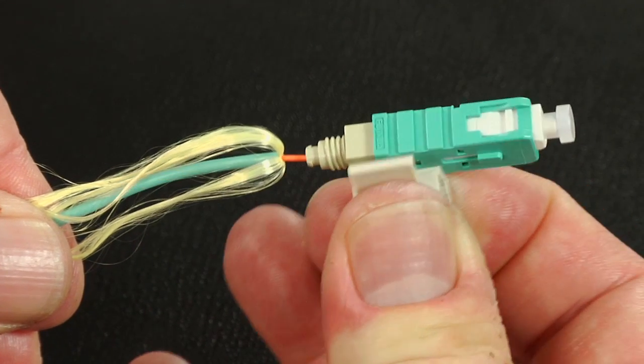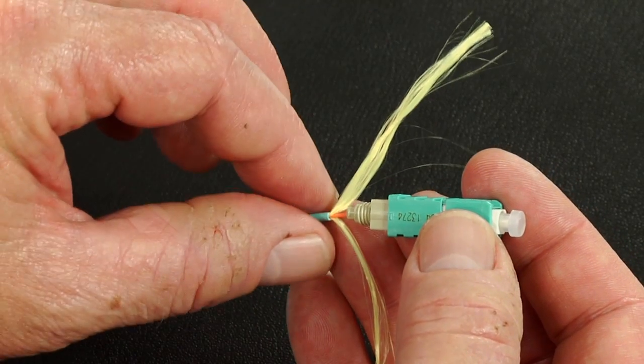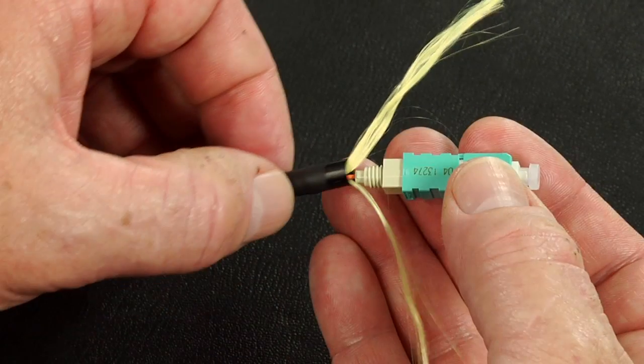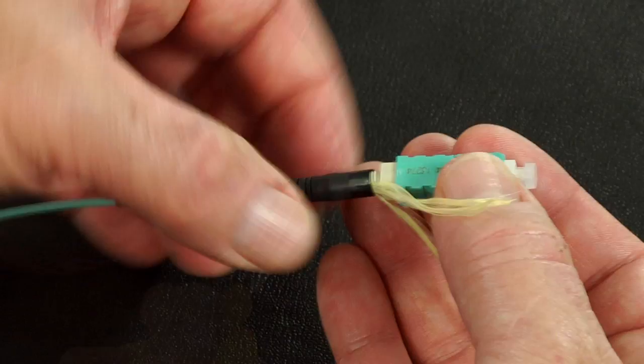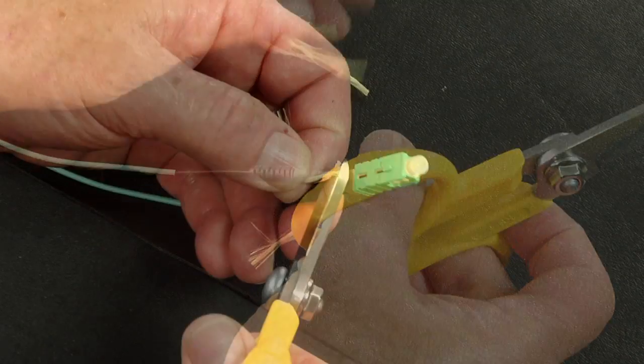Squeeze the wedge unit to release the wedge. Split the Kevlar equally to each side of the Kevlar grip. Slide the boot up and screw the boot onto the connector. Use the Kevlar scissors to trim the excess Kevlar.